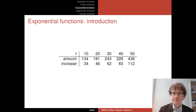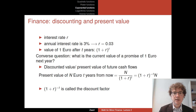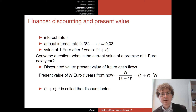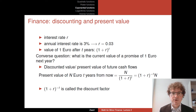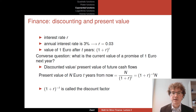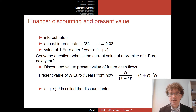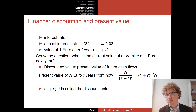Sticking with the finance example, with interest rate r — in our example r equals 0.03 — we saw that the value of one euro after t years is (1 + r) to the power t, where t appears in the exponent. We can also ask the converse question.